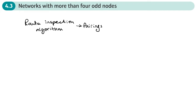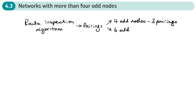If you've got just two odd nodes, then that's no problem - there was just one pairing. We had a few questions where we had four odd nodes, and in those there were three pairings, so that wasn't too bad to do. So what if I had six odd nodes? How many pairings would that be? Well, there would be 15 pairings, so it's growing quite quickly.